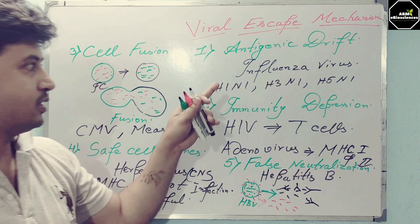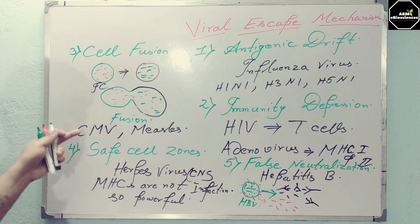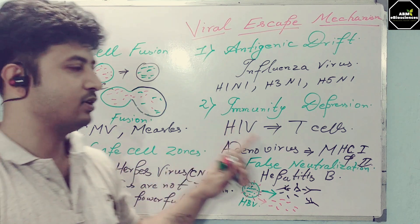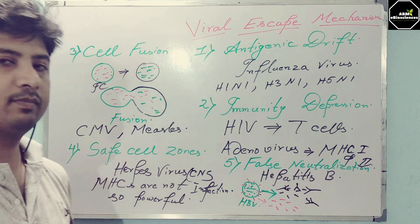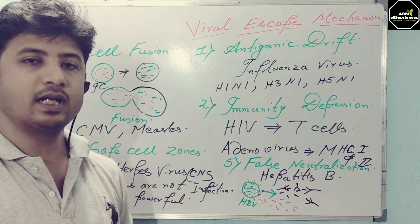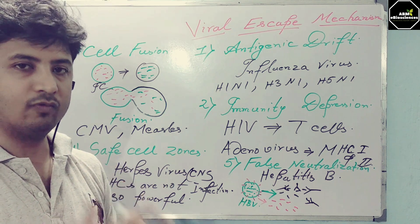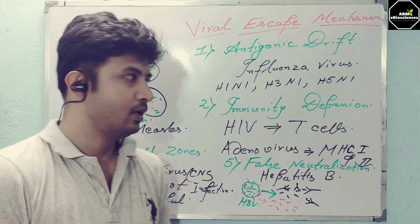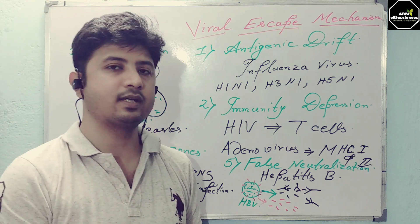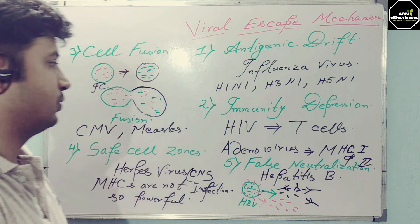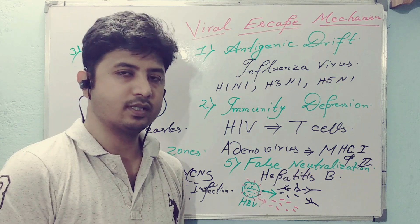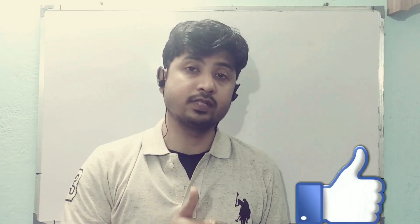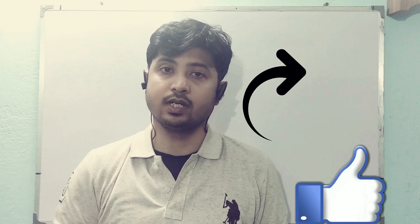To summarize: antigenic drift, immunity depression, cell fusion, safe cell zones, and false neutralization — these are the top five mechanisms generally used by viruses to escape the defense mechanisms of our body. I will take a similar class on bacterial escape mechanisms as well. If you have any questions, please ask in the comment section. If you like these classes, give a thumbs up and don't forget to subscribe. Thank you and be with me.